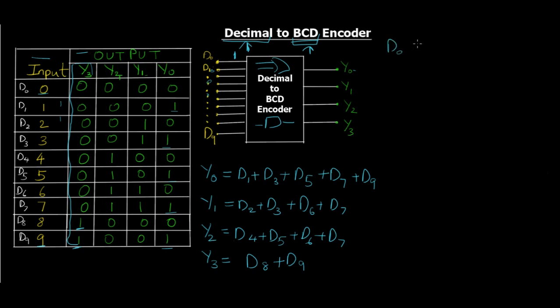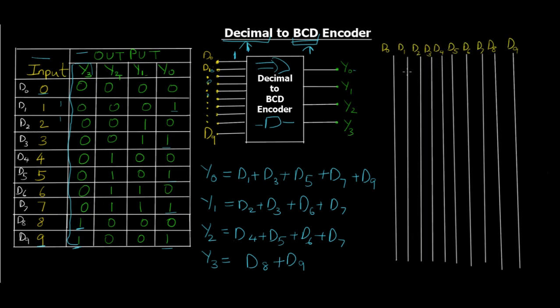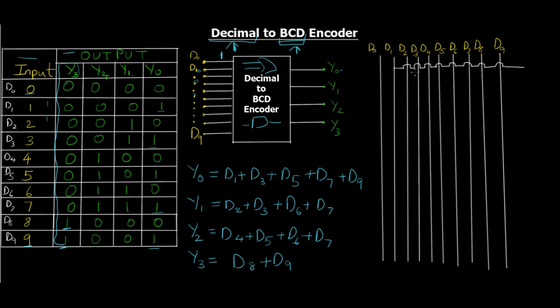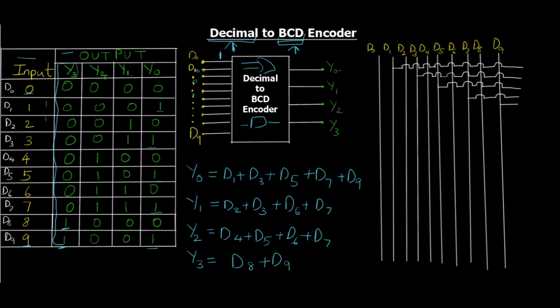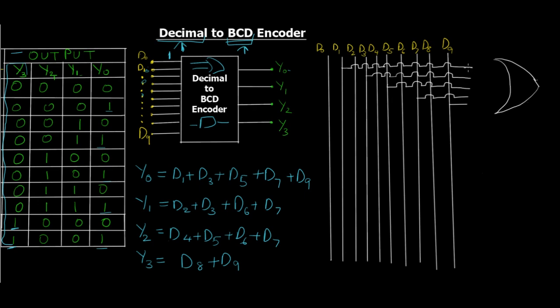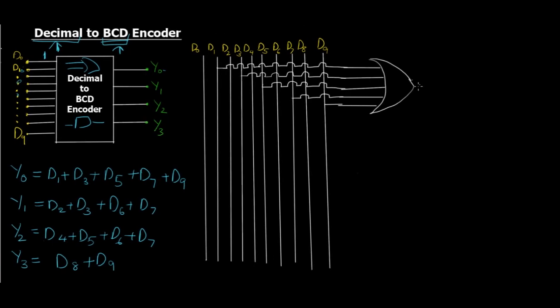Let's first draw the inputs. I've drawn the 10 different input lines. Now we're going to map these equations. For Y0 we have D1 or D3 or D5 or D7 or D9. Starting from D1, this is the first circuit line. Then we have D3, then D5, then D7, and then D9. All of these are going to go through an OR gate to perform the OR operation. Let me draw one OR gate—it's a big OR gate taking all these inputs. The output from this OR gate is Y0 = D1 + D3 + D5 + D7 + D9. So the first output is done.